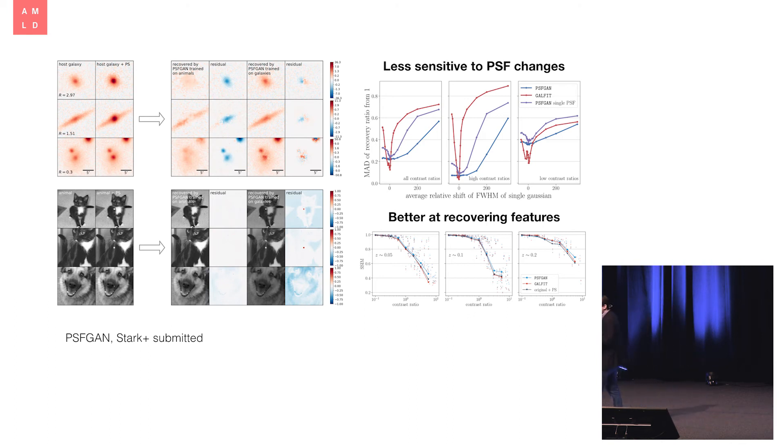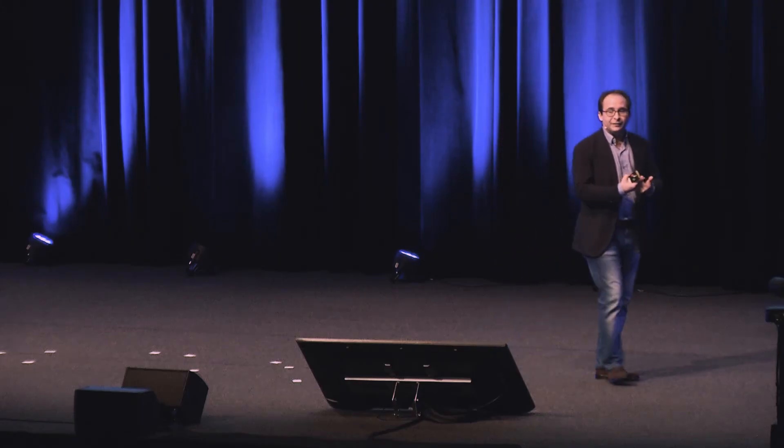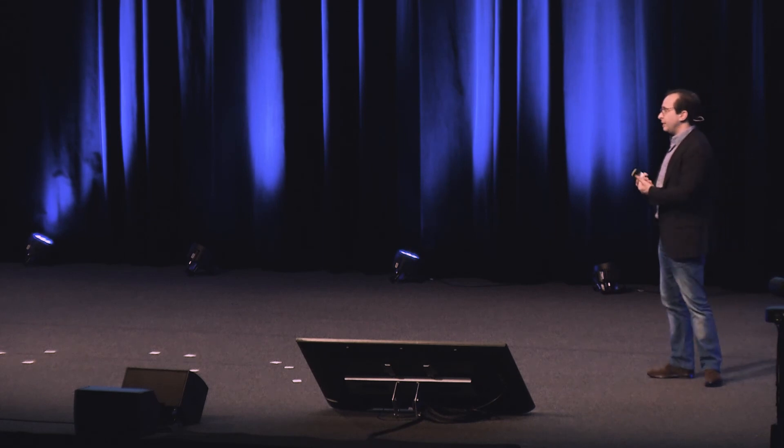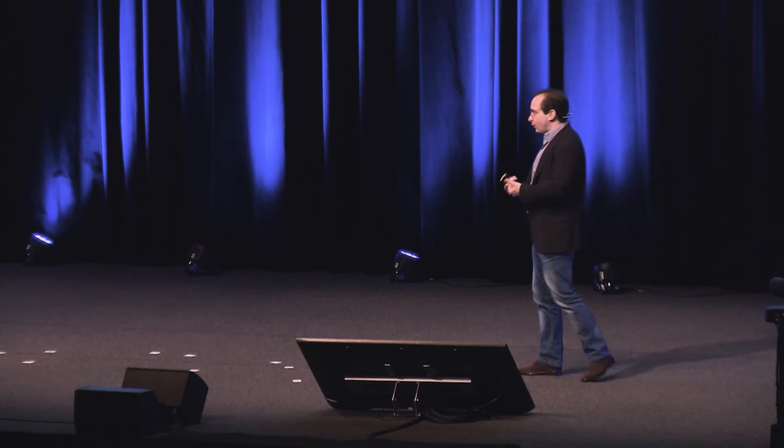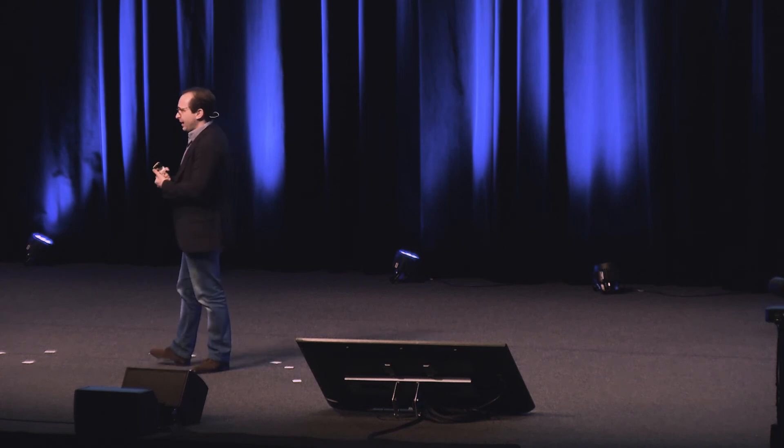We addressed the question: don't you need a really good training set? The answer is no, because we can train on images of cats and dogs and it still does a reasonably good job. That gives you confidence that you get a sensible result, even though you didn't have exactly the kinds of galaxies that quasars live in in your training set. It's also superior at recovering detailed features compared to the state-of-the-art fitting tool. You guys are not surprised by this, but pushing these tools out to skeptical astrophysicists is going to be quite a challenge.